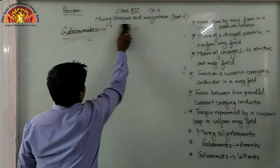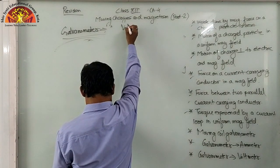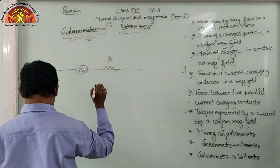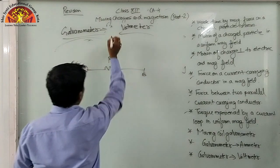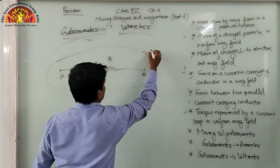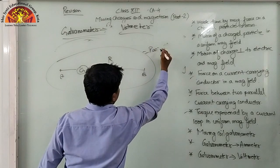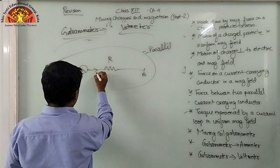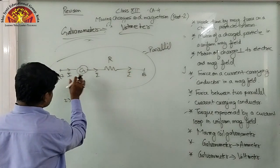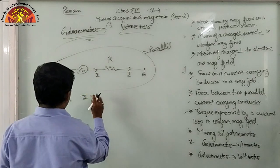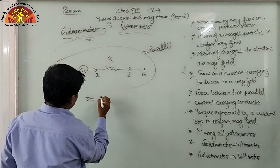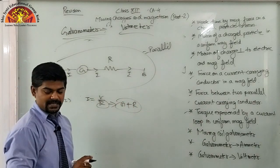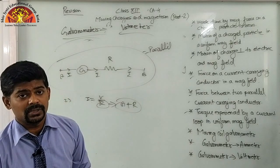If we want to convert a galvanometer into a voltmeter, a high resistance R is connected in series with the galvanometer. The voltmeter is connected in parallel in the circuit. The current Ig = V/(G + R). This is the conversion of galvanometer into voltmeter.